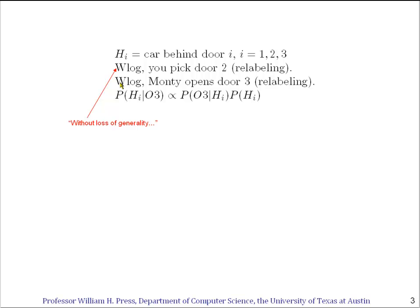Similarly, without loss of generality, Monty is going to open a door and we'll write the number 3 on that one — so that'll be door 3.